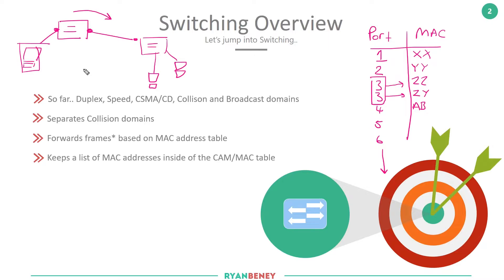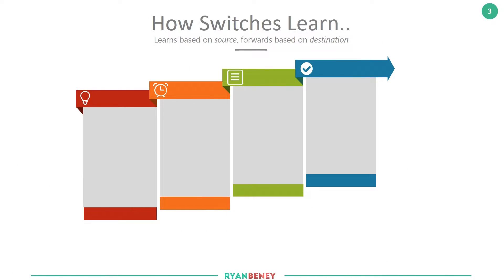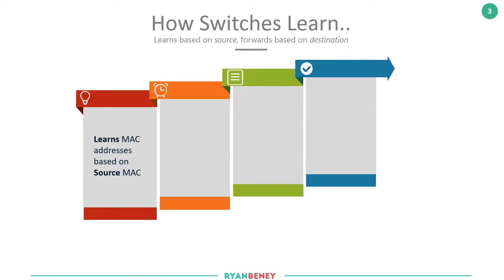A few questions come to mind: how is this table built? What if a MAC address is received and we're not aware of the destination? How does the table stay up to date? We'll answer these now. A switch learns by looking at the source MAC address of frames it receives.